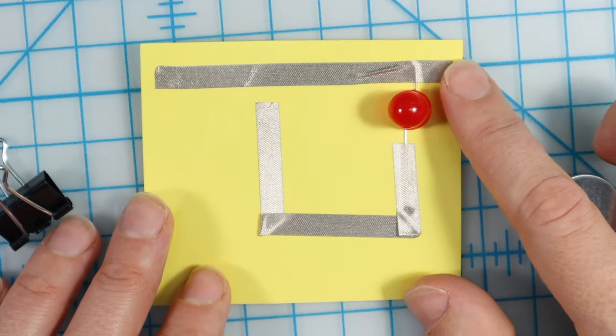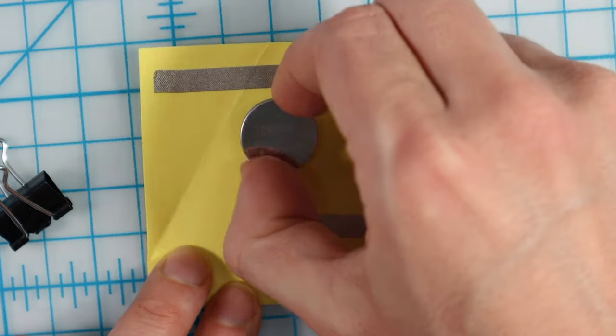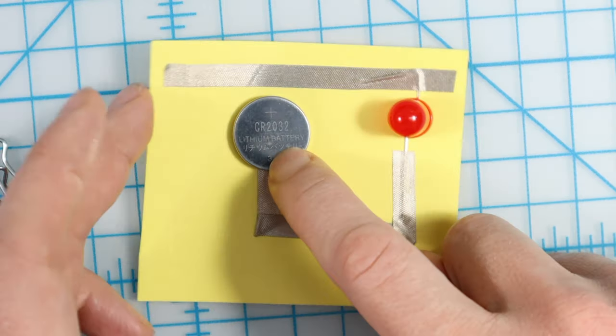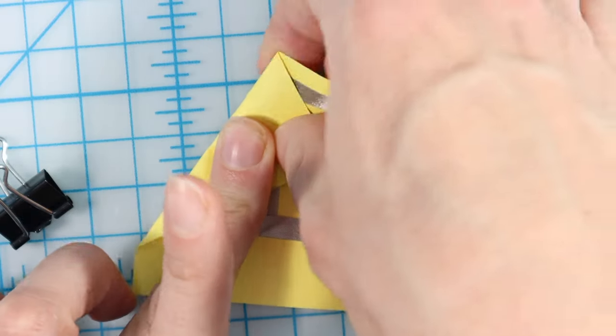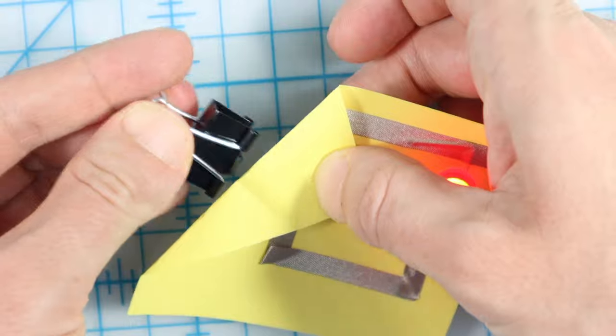We also sometimes use the binder clip method. In this method, run the Maker tape to the corner of the paper and fold it over the battery. Secure the battery in place with a binder clip.